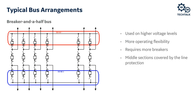The breaker-and-a-half bus is one of the most reliable designs in terms of bus topology, used at higher voltage levels, offering maximum operating flexibility. However, the drawback is it requires more breakers, which requires more real estate, making it a costly arrangement. In this scheme we have two buses, and loads and sources are always connected to both through the breaker-and-a-half on each section. The loads and sources on each section are protected by their own protection systems, while the bus zone itself is protected by its own bus zone protection.